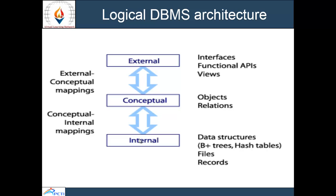Next is architecture of database. The database architecture is divided into three major components: internal architecture, conceptual architecture, and external architecture. External architecture is closest to the user, providing the interface, functional application interfaces, and views through which the user interacts with the database. At the conceptual level, the objects and relations between objects are described. At the internal level, which is closest to the physical device, the data structures, files, records, and physical devices are related to the internal logical DBMS architecture.